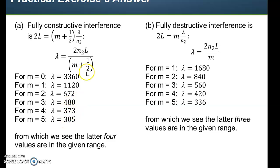That works out to be 3,360 nanometers, 1,120 nanometers, 672 nanometers, 480 nanometers, 373 nanometers, and 305 nanometers. And these many right here are between 300 and 700. These are outside the range, and the next one here is going to be much lower than that.